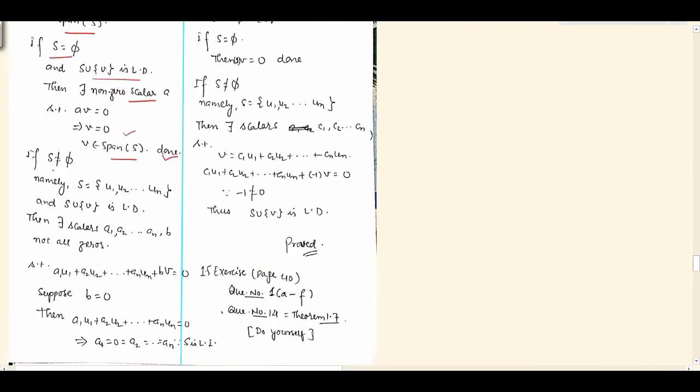Now for non-empty. If S is non-empty, namely S has elements U1, U2, and so on UN. And S union v is LD, that's given. So there exist scalars A1, A2, and so on AN, comma B. Because A1, A2, AN we took for U1, U2, UN, and B we took for small v. Not all zeros, these are not all zeros, such that this condition holds. We just used the definition of LD here.